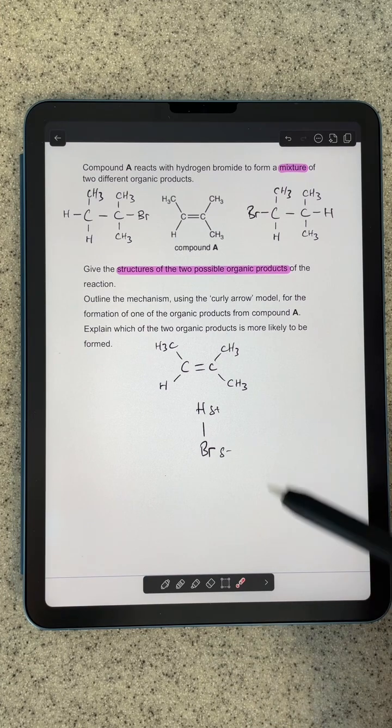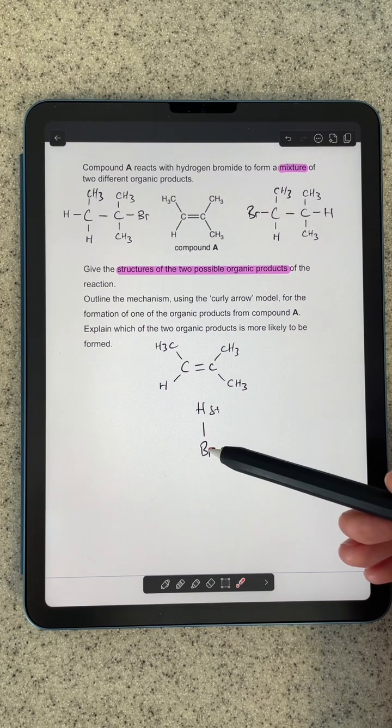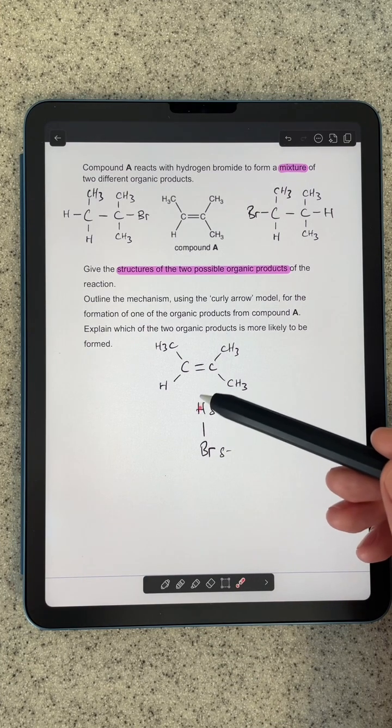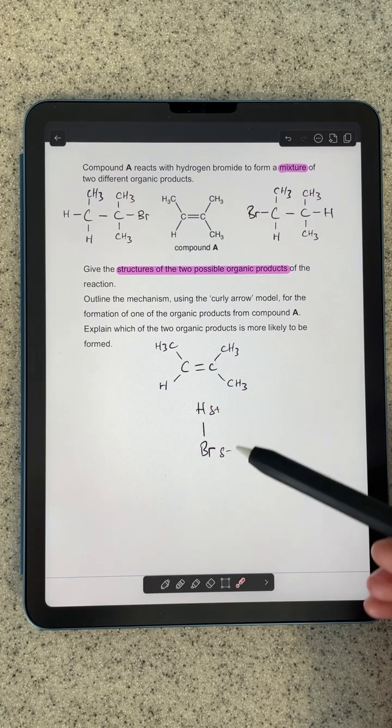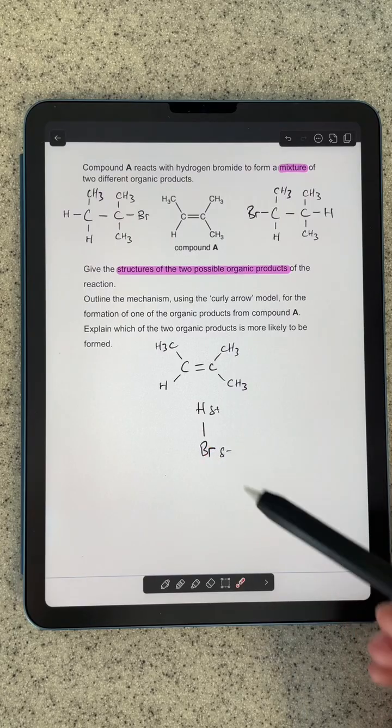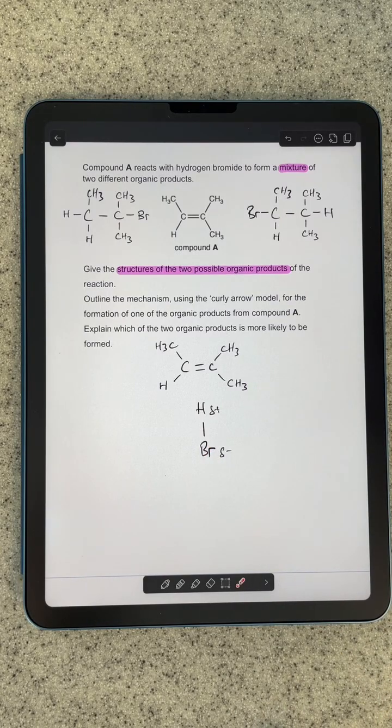So the first thing we're going to need is this hydrogen bromide molecule, and it's going to add this way around because of where the dipole is. So slightly positive on the hydrogen, slightly negative on the bromine, because bromine is more electronegative than hydrogen.